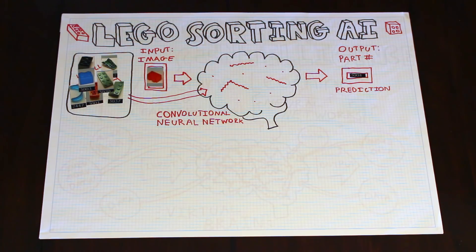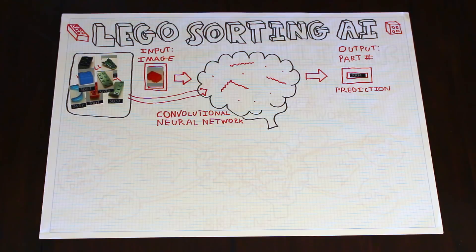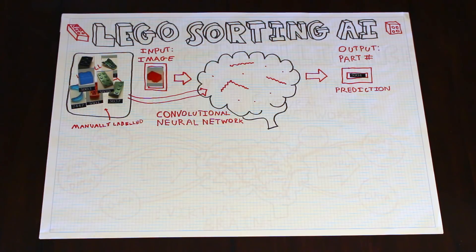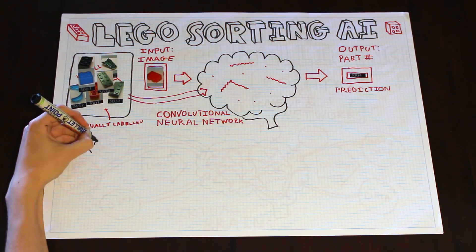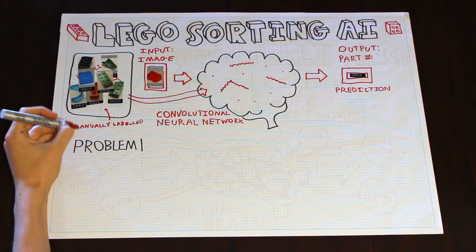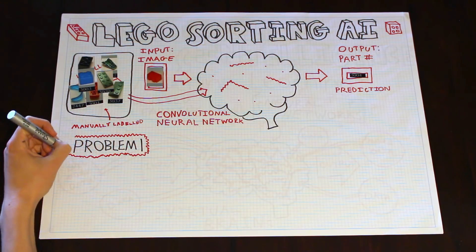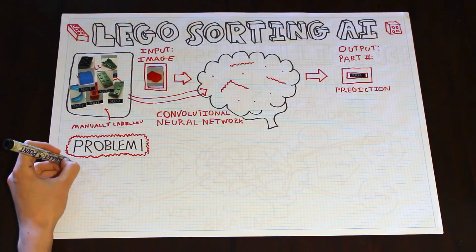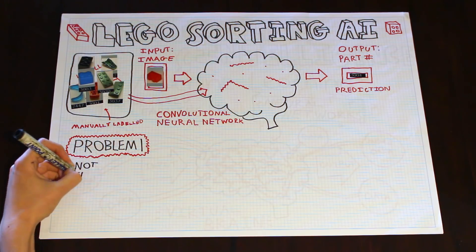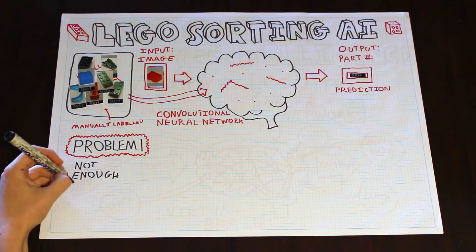Typically, in an application like this, you'd collect a bunch of images and manually label them all. But in our case, this causes a problem. There are just so many different types of parts, in so many different colors and possible orientations. With a small number of manually labeled images, we just can't build up enough of the connections we need in our virtual brain.